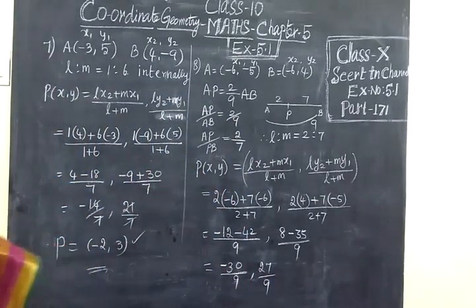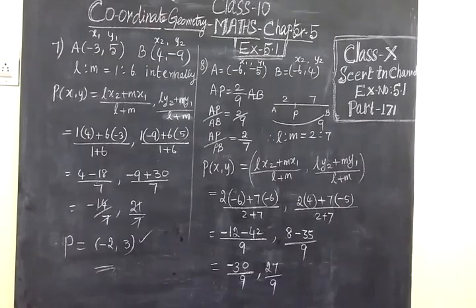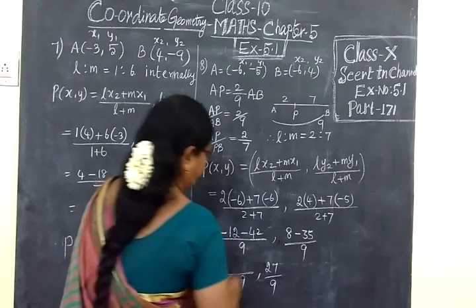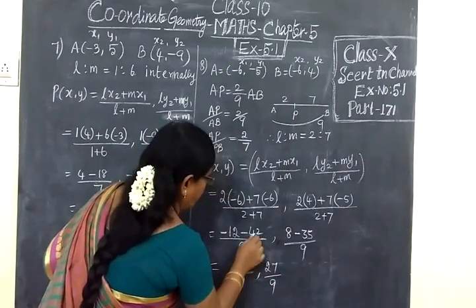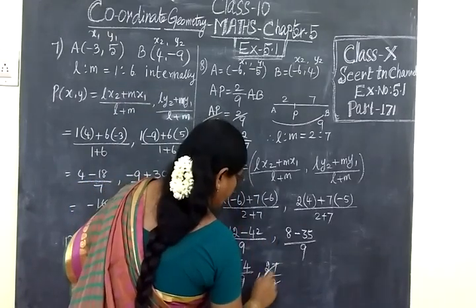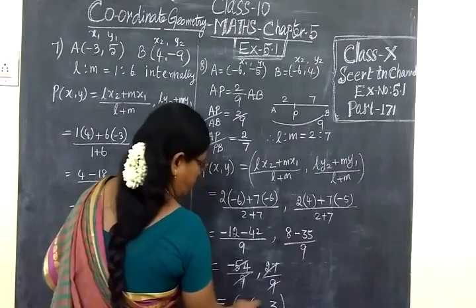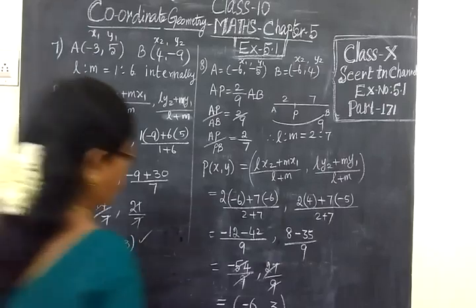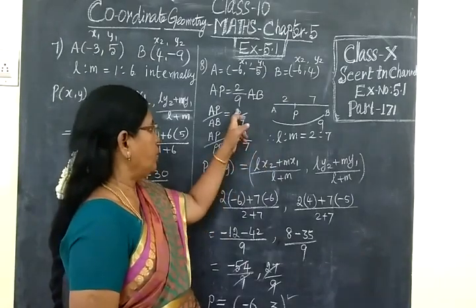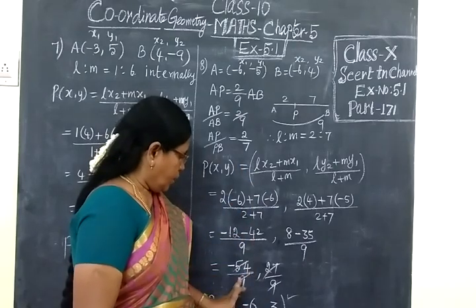Now we check the answer for the 8th one. 8th one answer: minus 12, minus 42, 8 minus 35, by 9. Here minus 42 minus 30. Minus 3. You have to add and put greater number 5. So 2 plus 2 is 4, then 4 plus 1 is 5. Then here minus 35. So 27. If you cancel, you are getting 3. Here, 6th — this is minus. So minus 6 plus 3. So the answer is minus 6 comma 3. Thank you.